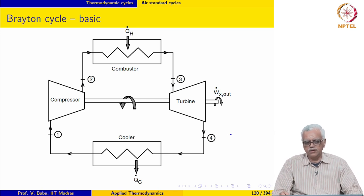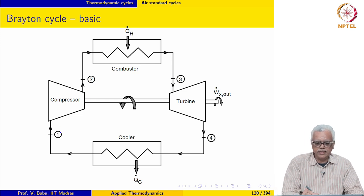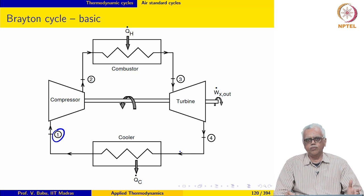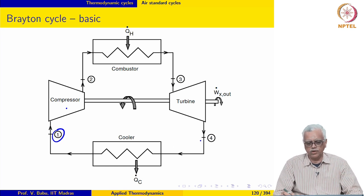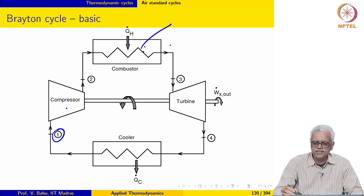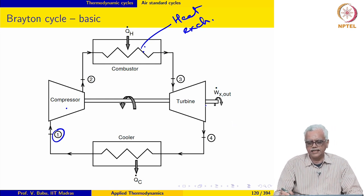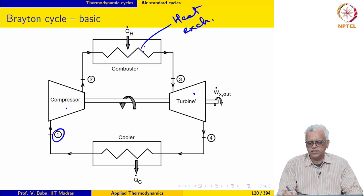We may illustrate the Brayton cycle in block diagram form. We start with ambient air at 100 kilopascal and 300 Kelvin temperature. It goes to a compressor where it is compressed through a pressure ratio of say 30 or 40, and the air is then taken to a combustor. Notice that in this air standard cycle, the air is never mixed with the fuel, so the combustor is essentially nothing but a heat exchanger — heat is added in the combustor to the air stream, and it gets heated up. It then goes to the turbine where it undergoes an expansion process, and part of the power generated by the turbine is used to run the compressor.